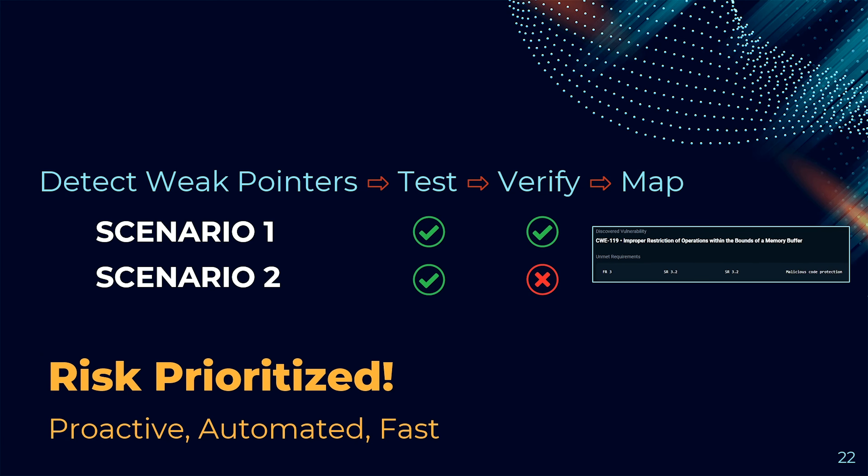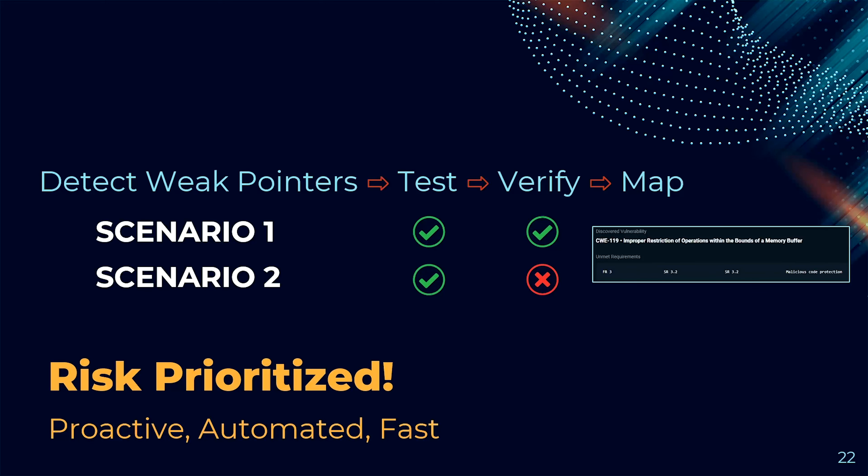Scenario one: prioritize. Scenario two: put that on the lower part of your stack to patch. The process is proactive, automated, and fast. This is currently being used in large nuclear environments and in manufacturing to prioritize risk — primarily for end-of-life legacy devices. It's also being used for Industry 4.0 devices, which are primarily web-based. If you have a web app associated with a PLC that you need to manage or patch, it can handle both sides of the Industry 4.0 picture.